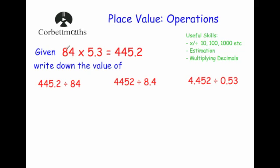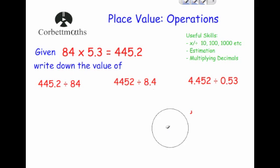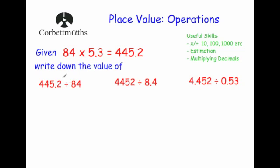Now this time it's slightly different. We've got 84 times 5.3 equals 445.2. Instead of having a multiplication, we've got a division — our answer has become the number we're dividing, and one of the numbers in the multiplication is what we're dividing by. For example, 5 times 2 equals 10; if you take the answer and divide it by one of the numbers, you get the other number. So 445.2 divided by 84, the answer is just going to be 5.3.